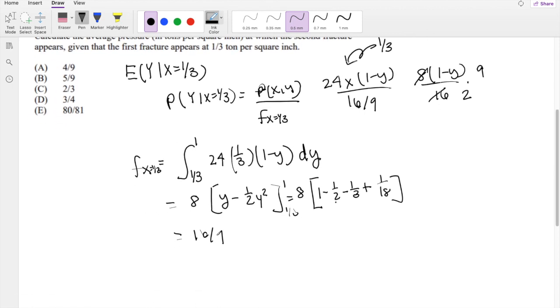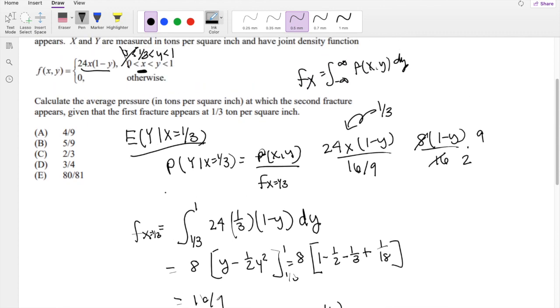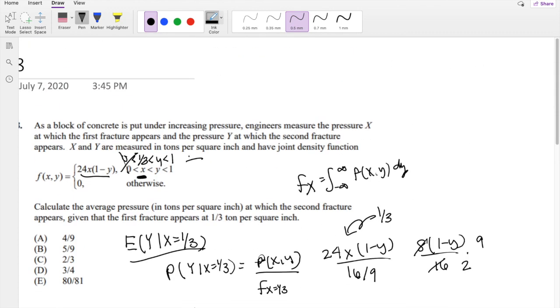But the actual problem is asking for expectation. Well, expectation is just Y times the probability function, right? So then that's going to be equal to Y times our function, one minus Y, times nine over two. Evaluated, same limits, because of this right here.